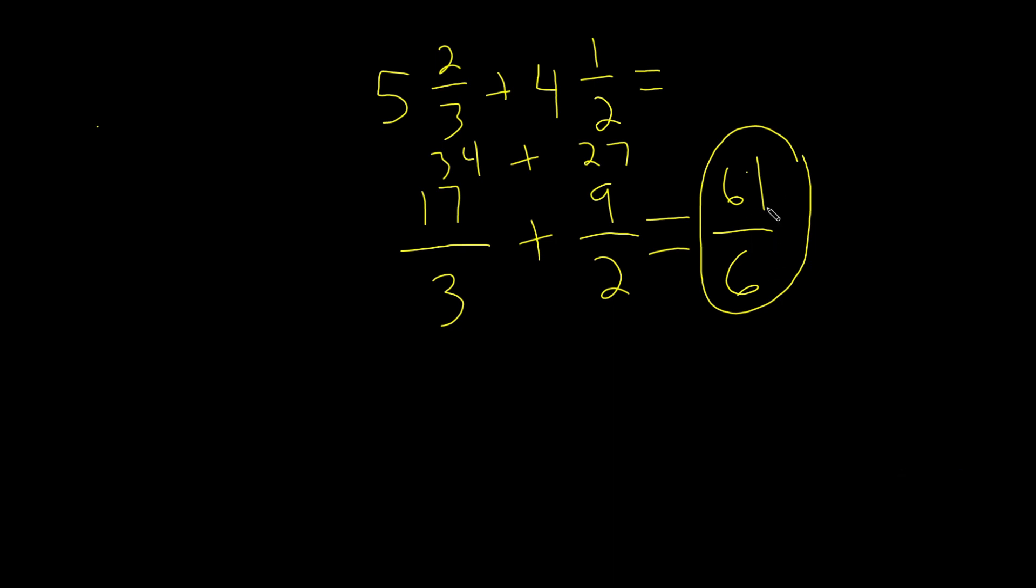And now we can actually convert this into a mixed number. And if you haven't already, go watch our video on converting improper fractions into mixed numbers. To convert this, let's write this down right here. 61 over 6. We're going to find out the most amount of times 6 can go into 61, with it being less than 61.